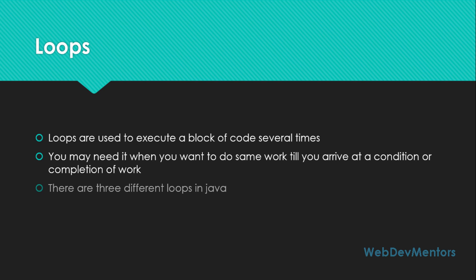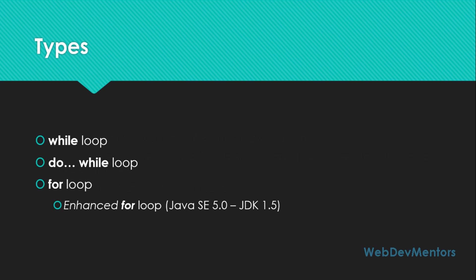There are three different loops available in Java: the while loop, the do-while loop, and the for loop. The for loop also has an enhanced for loop that came after Java SE 5.0, which is JDK 1.5, and you can use that to handle arrays in Java looping concepts. Let's see each of these loops in detail.